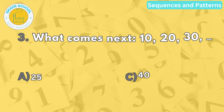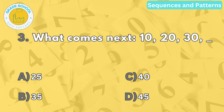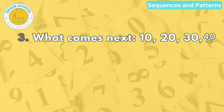Question number three. What comes next? Ten, twenty, thirty, blank. The correct answer is letter C. Forty. The sequence adds ten to each number in order.